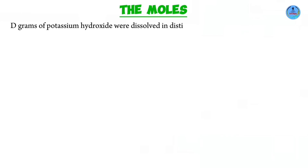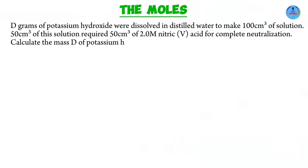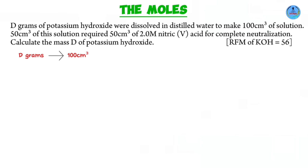Our first question. D grams of potassium hydroxide were dissolved in distilled water to make 100 cubic centimeters of solution. 50 cubic centimeters of this solution required 50 cubic centimeters of 2 molar nitric acid for complete neutralization. Calculate the mass D of potassium hydroxide. We've been provided with the relative formula mass of potassium hydroxide as 56.